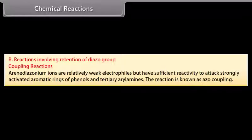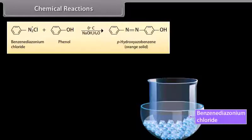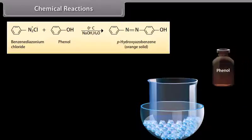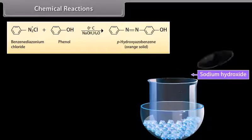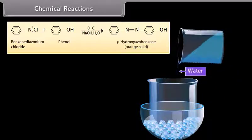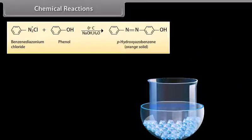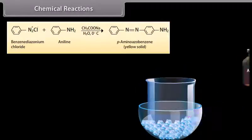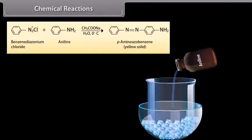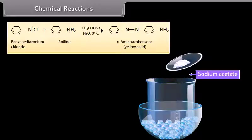Reactions involving retention of the diazo group — Coupling reactions: Benzene diazonium chloride reacts with phenol in the presence of sodium hydroxide and water at 0°C to produce para-hydroxyazobenzene. Benzene diazonium chloride reacts with aniline in the presence of sodium acetate and water at 0°C to produce para-aminoazobenzene.